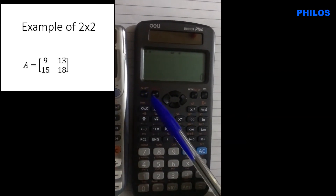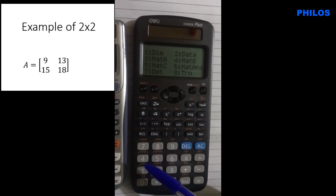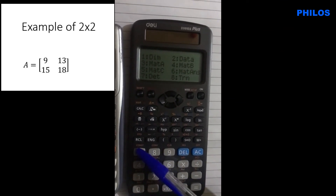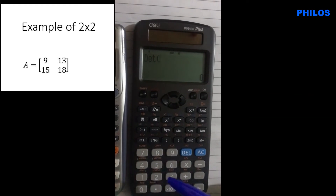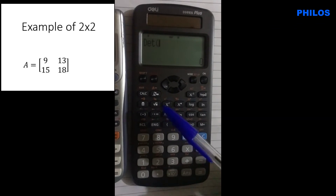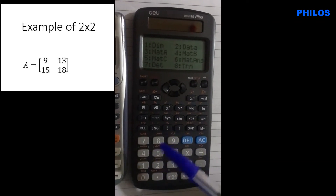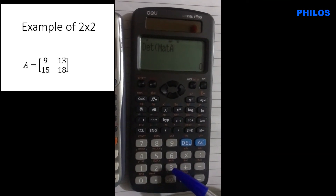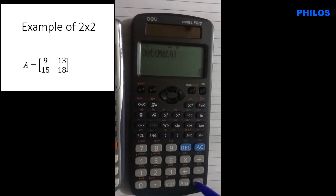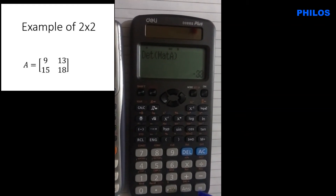To get the determinant, click Shift, option 4, then option 7 for determinant. Determinant of what? Matrix A — so press Shift, option 4, option 3 for Mat A. Close the bracket and press equals. The determinant of matrix A is −33.